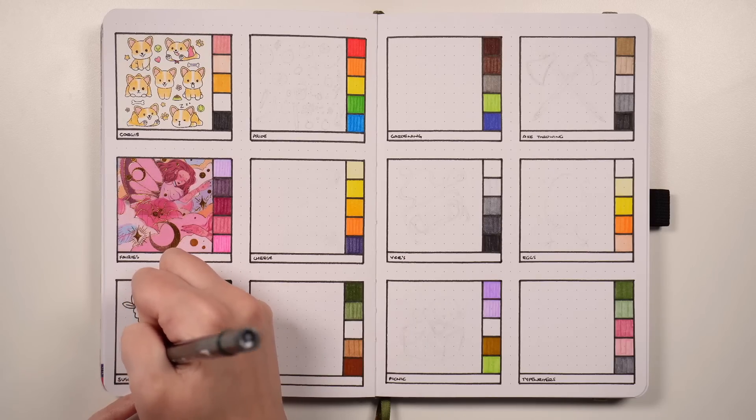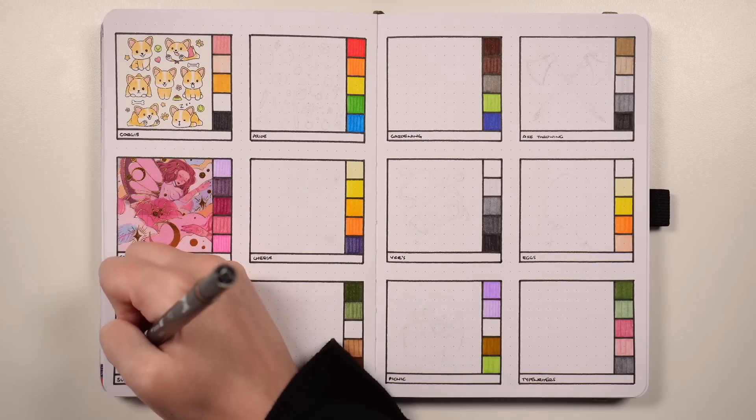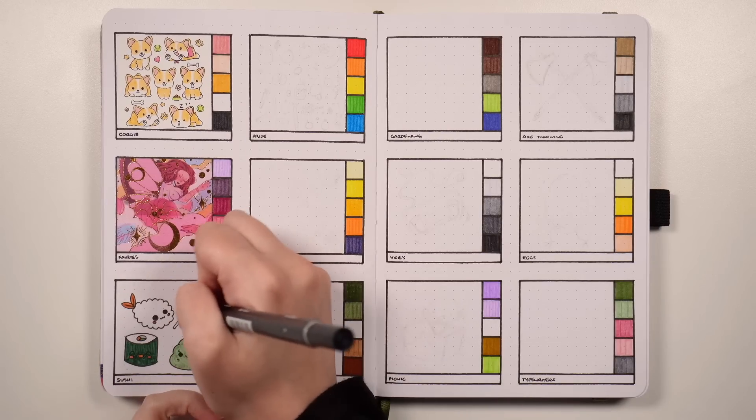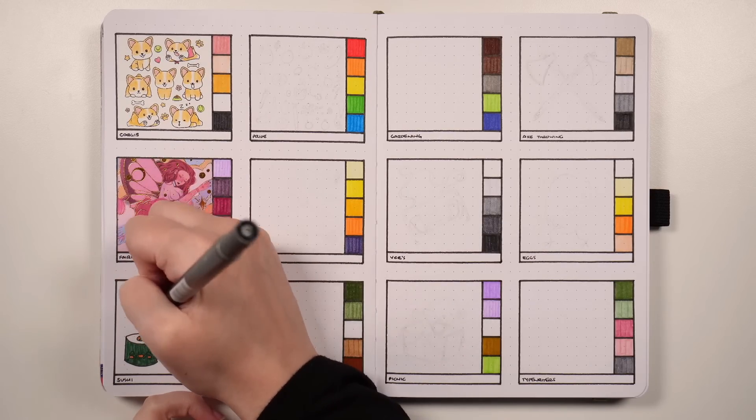Or you could do things like a little tempura, or do some wasabi chopsticks. Other bits and pieces that you might serve with sushi, a little soy sauce bottle, some nigiri, or whatever else. As said, I really want to do this theme in my bullet journal one day. I'm not doing it this year, but at some point it's going to happen.